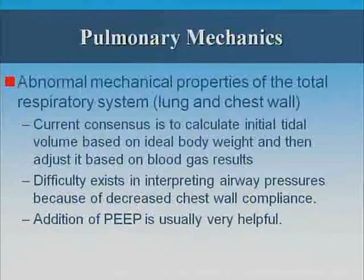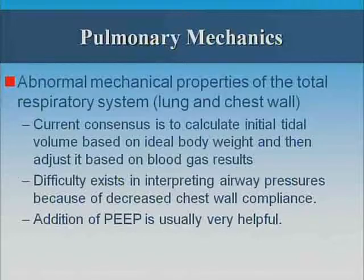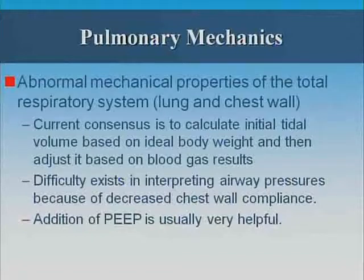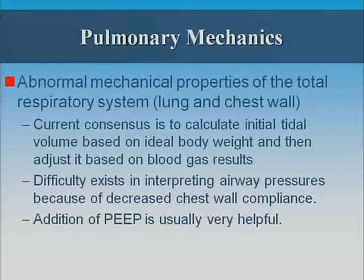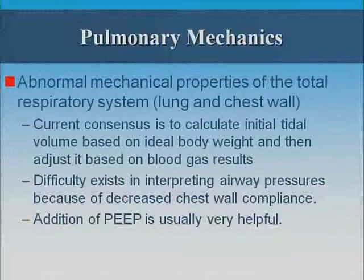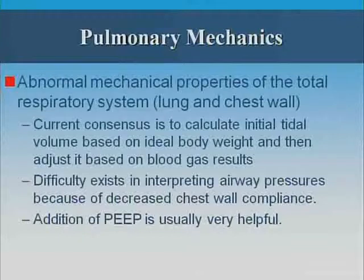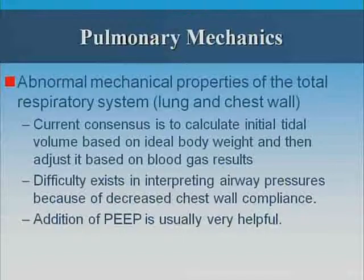The abnormal mechanics of the chest wall lead you to do certain things when setting up the ventilator. The current consensus — there are no randomized control trials — is to take the ideal body weight, set the ventilator based on that, and titrate based on blood gases. You can spend a lot of time deciding how to calculate ideal body weight; the usual calculation appeared in one paper in 1974 on gentamicin dosing and has not been validated since. Pick a number, ventilate, and titrate frequently with blood gases.